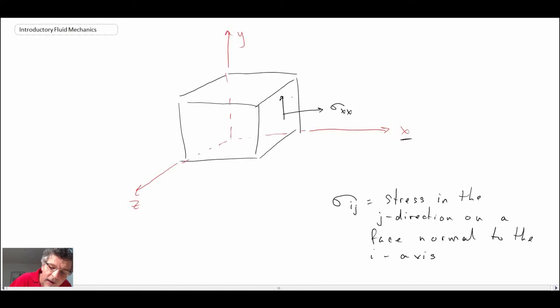On the z face we have sigma_zz, sigma_zy on the z face in the y direction, and sigma_zx on the z face in the x direction. Finally on the top, that would be sigma_yy on the face y in the y direction, sigma_yx on the y face in the x direction, and sigma_yz on the y face in the z direction. That's the convention we use within fluid mechanics.